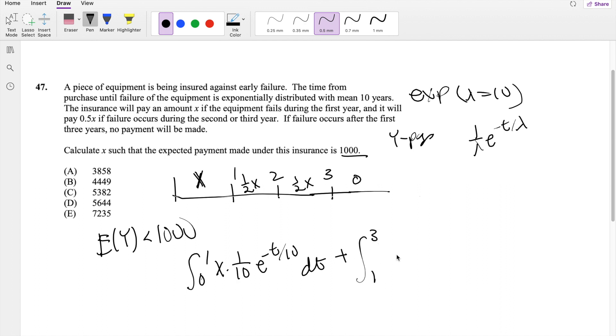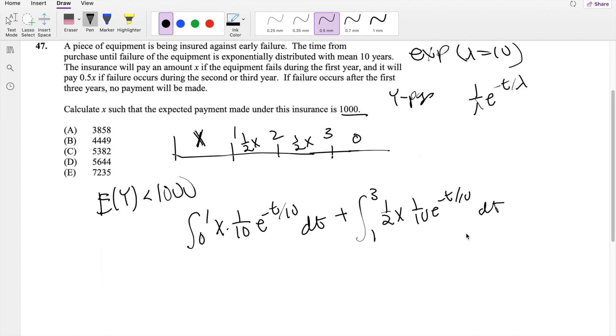From 1 to 3, we're integrating one half X times the distribution function, which is 1 over 10, E to the negative T over 10, DT.